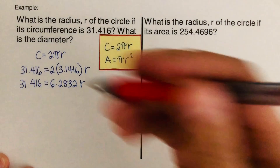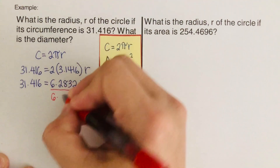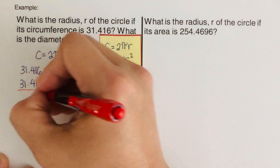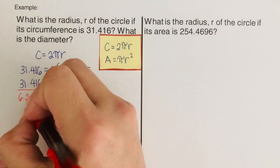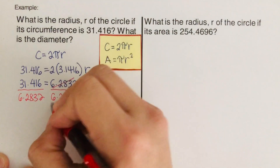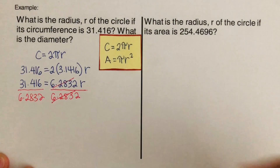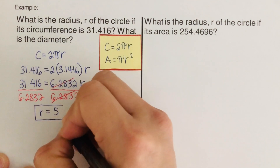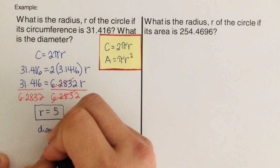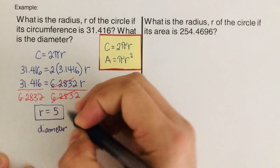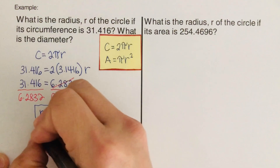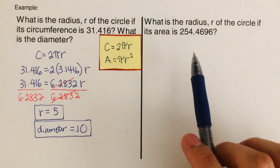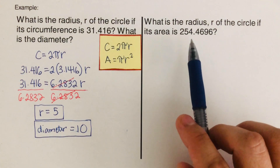Since the radius is 5, and diameter is twice the radius, our diameter is 10. Now pause the video and try the next problem on your own, then resume to check your answer.